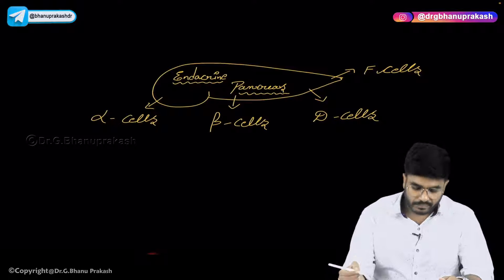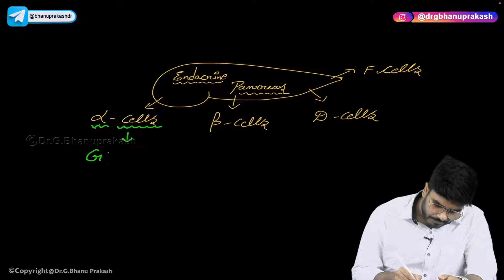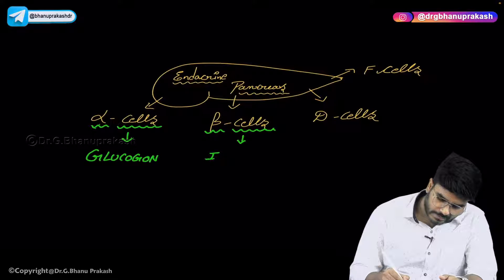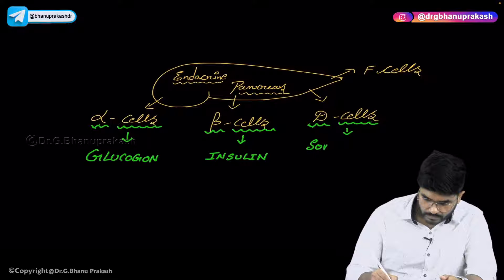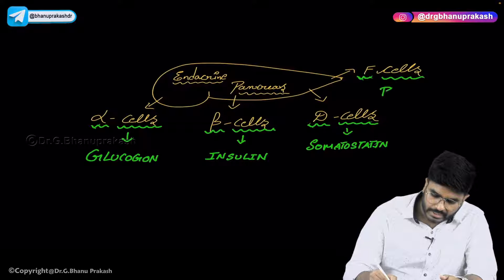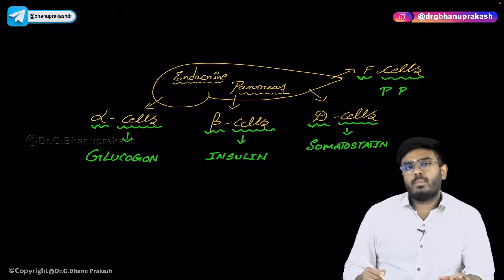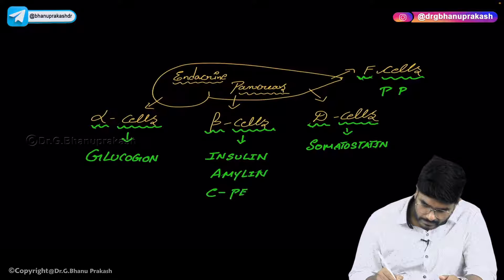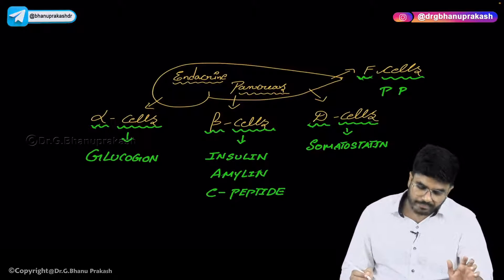Four different important types of cells are there. Alpha cells produce glucagon. Beta cells produce insulin, D cells produce somatostatin, and F cells produce pancreatic polypeptide. Importantly, beta cells not only produce insulin but also produce other hormones like amylin and C peptide. So totally, beta cells produce three hormones: insulin, amylin, and C peptide.